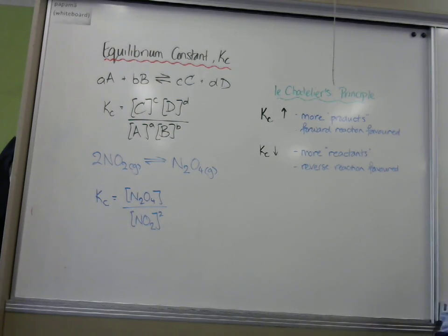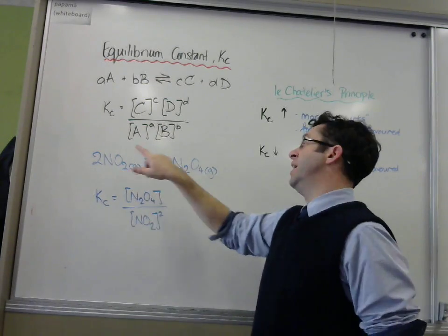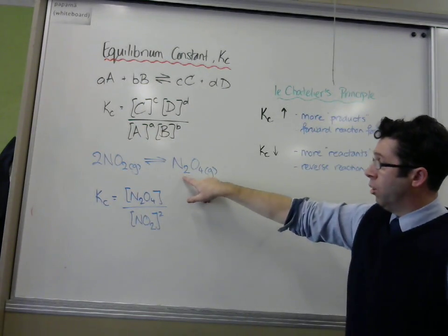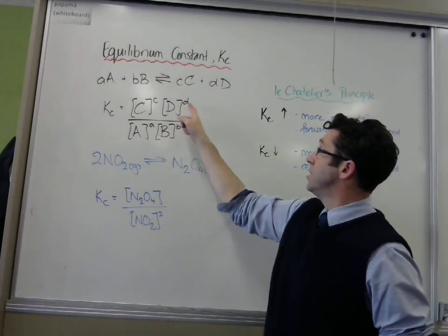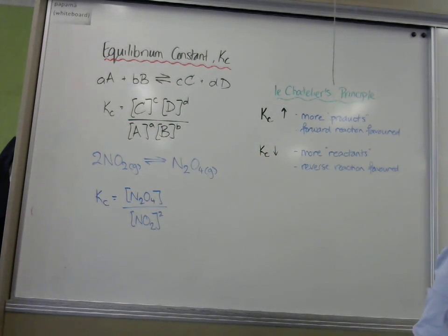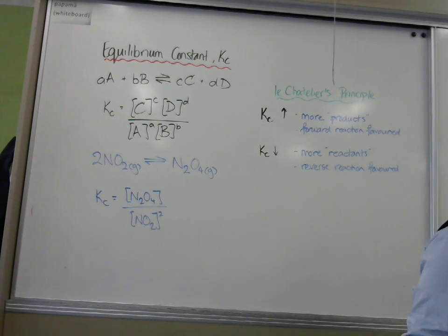Today, what that meant was we had an equilibrium system where we had two moles of NO2 in an equilibrium system with one mole of N2O4. So the little letters become numbers, so exponents, powers in other words, and the big letters become molecules or ions or compounds. So that's what they really mean.